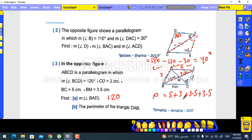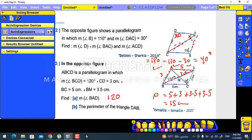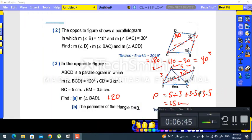So 5 plus 3 is 8, 8 plus 7 equals 15 cm. Now we have finished our revision on parallelograms.